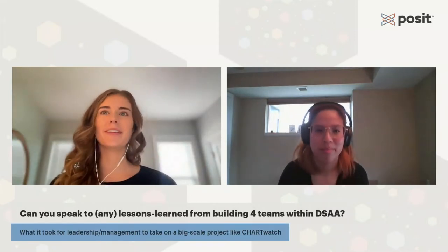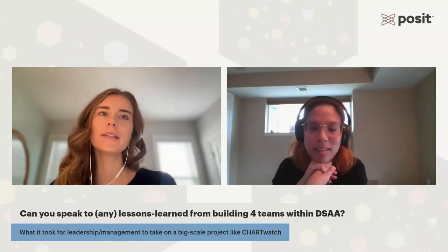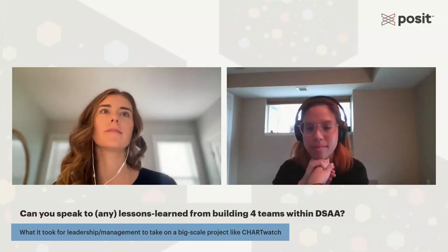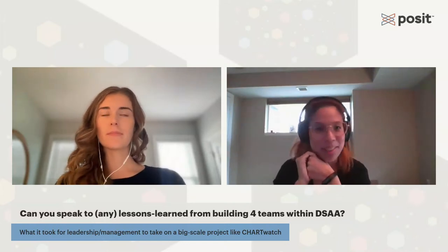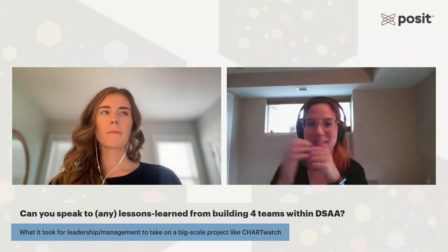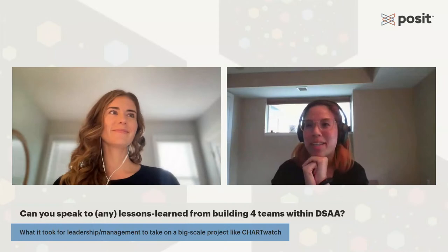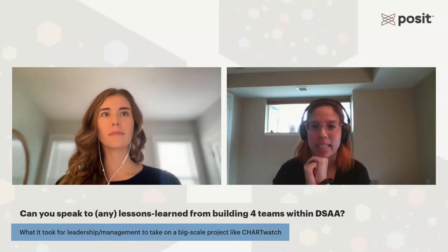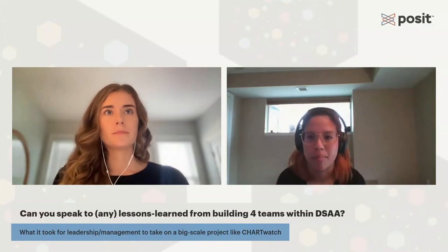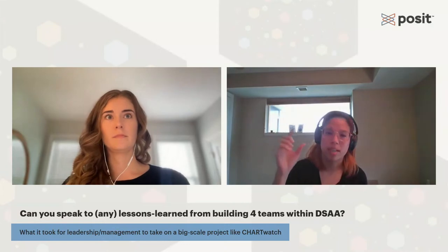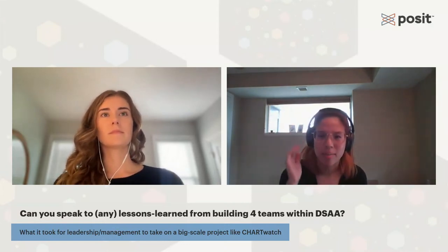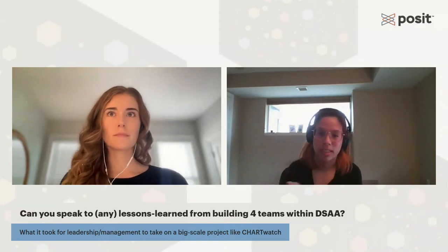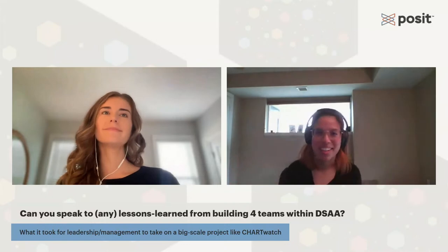Can you speak to lessons learned from building four teams within DSAA? What did it take for leadership to take on a big-scale project like ChartWatch? When we first started, we did not have the four-team structure — just data scientists doing a bit of everything. We found certain people were a lot more knowledgeable in one aspect, so it made sense to split into four different teams. Within each team there is a director, which makes management and coordination more streamlined. As a data scientist, I can focus on doing data science work without thinking about all the other unrelated things.